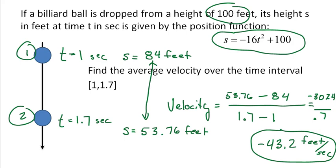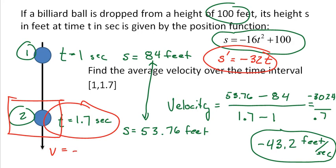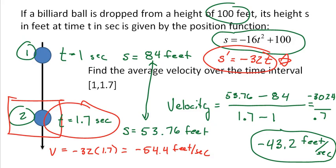Going back to the billiard ball problem — instead of average velocity from 1 to 1.7, if I ask for the instantaneous velocity at 1.7 seconds, I need the derivative. The derivative of the position function is negative 32t. That is a formula for the velocity. So the velocity at the instant of 1.7 seconds: negative 32 times 1.7 equals negative 54.4 feet per second. And that is instantaneous velocity — that's calculus. How easy is that? It's just taking the derivative.